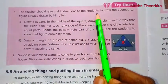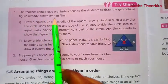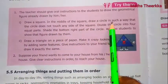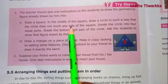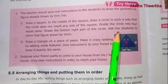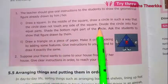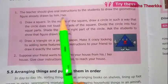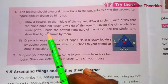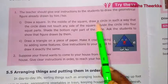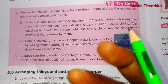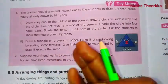The teacher gives oral instructions to students to draw a geometrical figure. Draw a square. In the middle of the square, draw a circle such that the circle does not touch any side of the square. Divide the circle into four equal parts. Shade the bottom right part of the circle. Ask the students to show the figure they drew. Approximately, the pattern is contained in this figure.